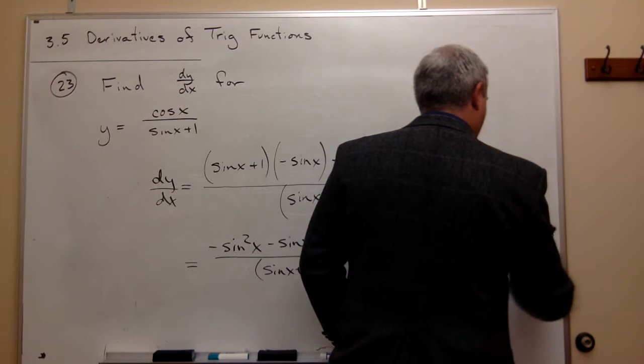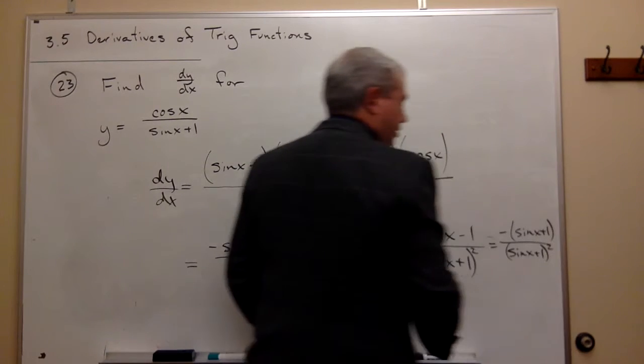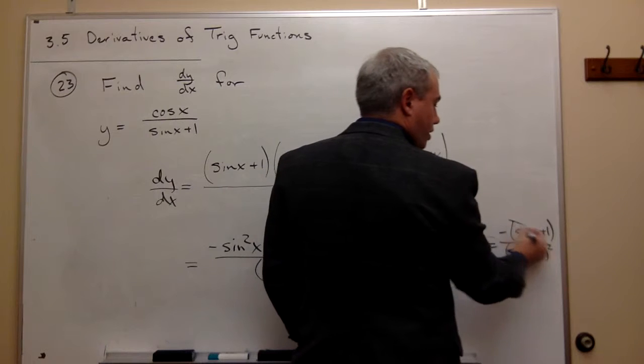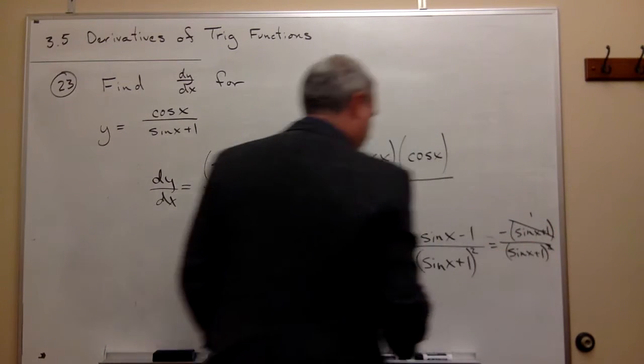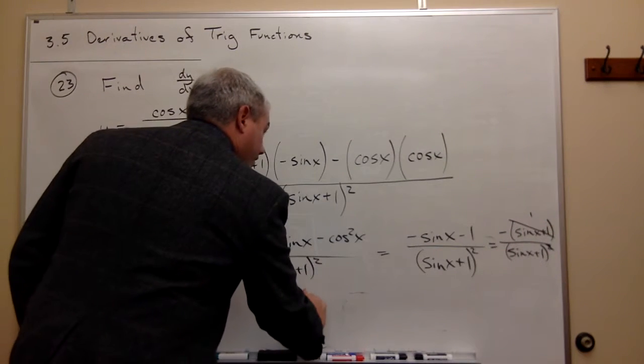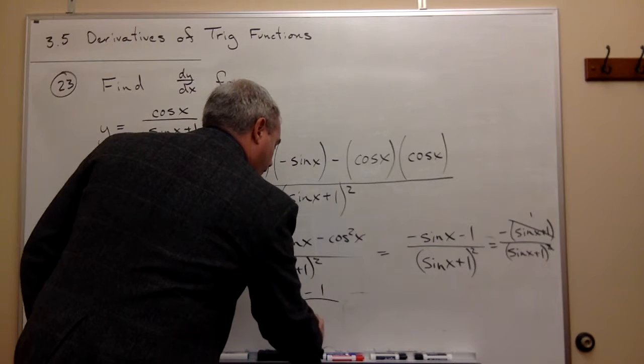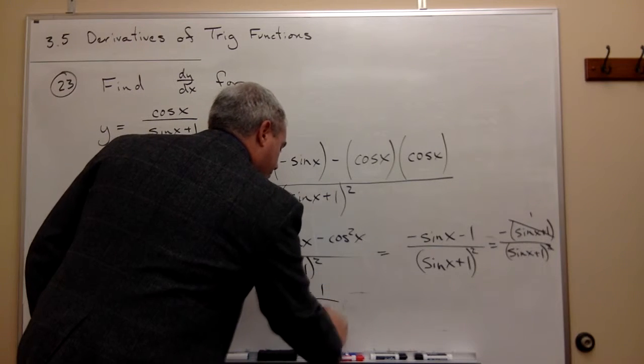One of the sine x plus 1 cancels and left with 1 on top, which would just leave me with negative 1 over sine x plus 1.